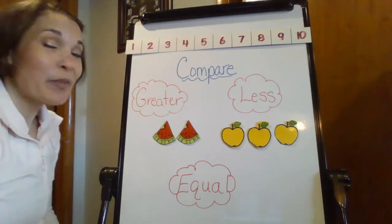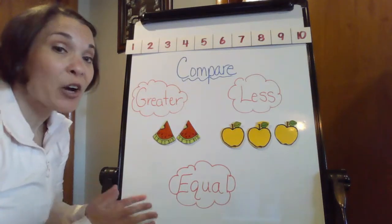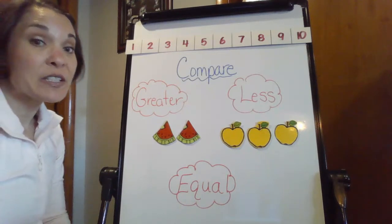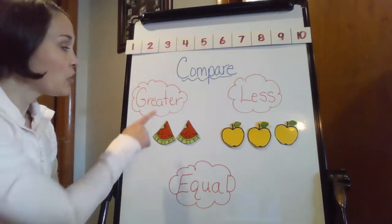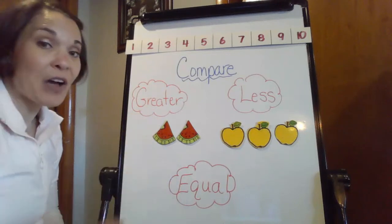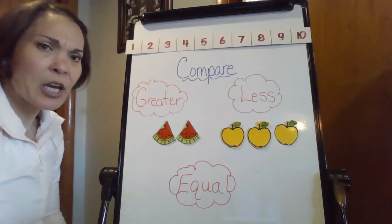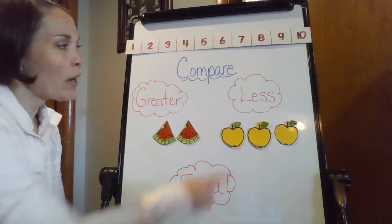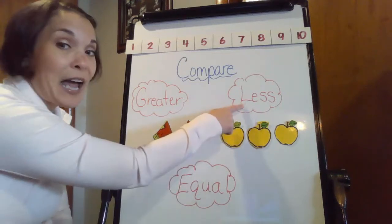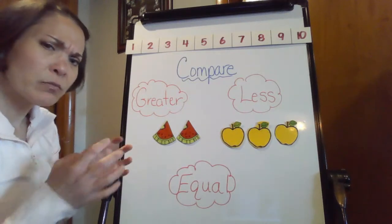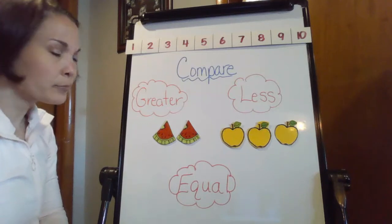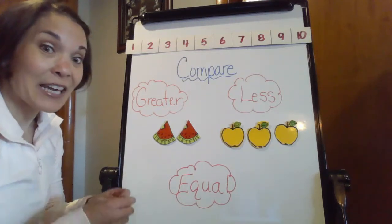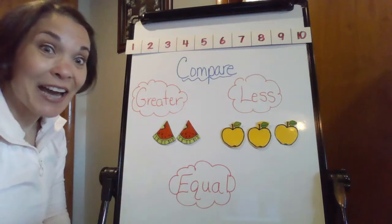So, as you can see, when we compare numbers in math, we compare them by using some special words. Here I have the word greater — greater means more, bigger. When I look at the word less, I'm thinking about smaller. When I think about the word equal, I think exactly the same.